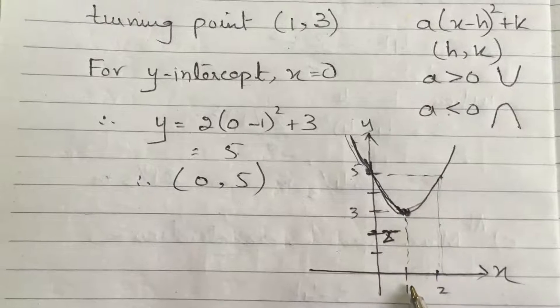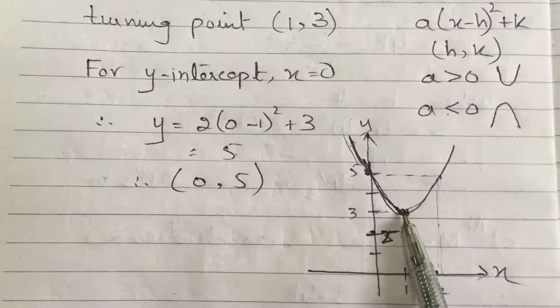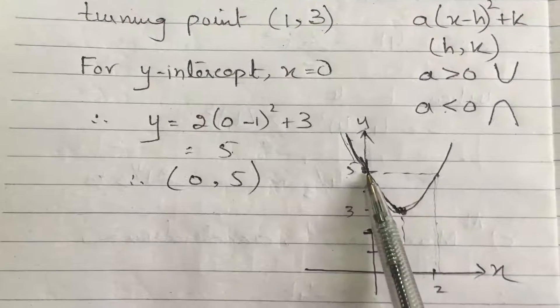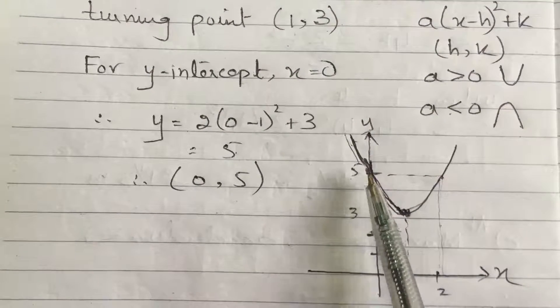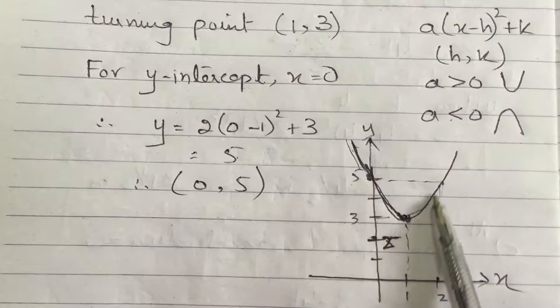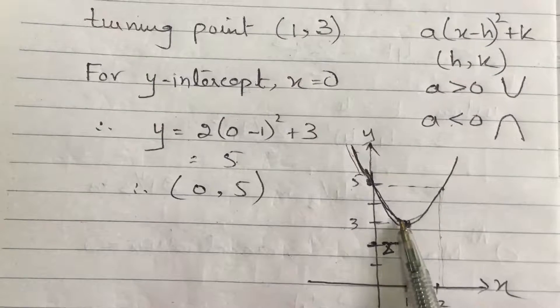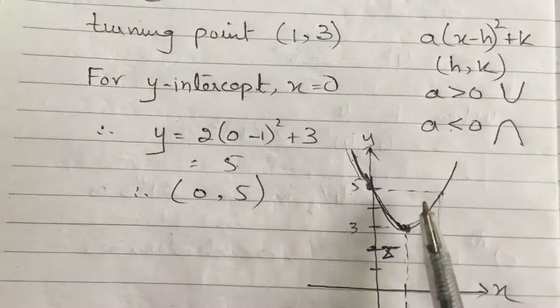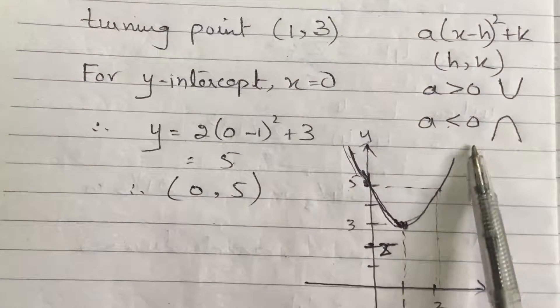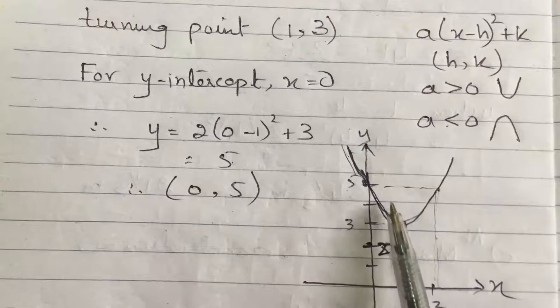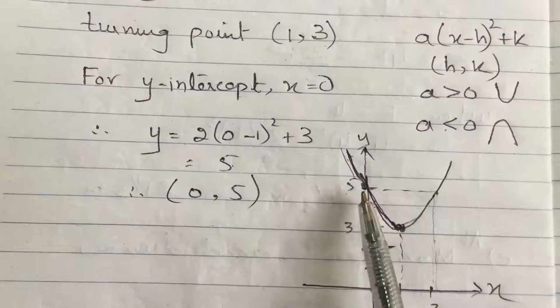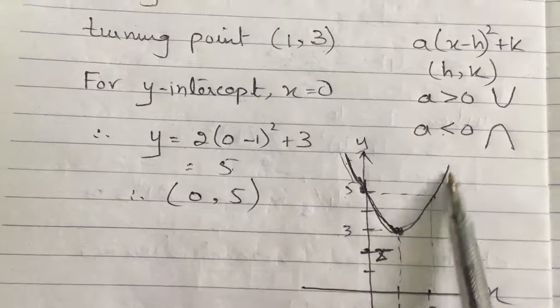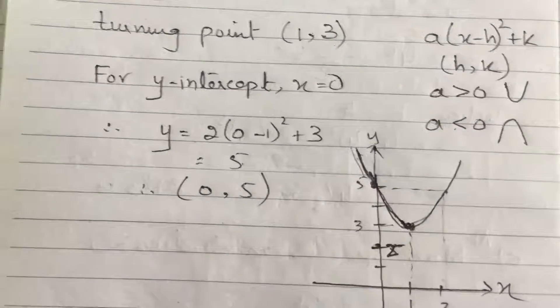So now we have the turning point which is 1, 3, and y-intercept at 5. Because we know that this quadratic curve which is called parabola is a symmetrical curve, therefore we will just complete the sketching by using these two points. And this will be symmetrical to it. The curve sketch is completed over here.